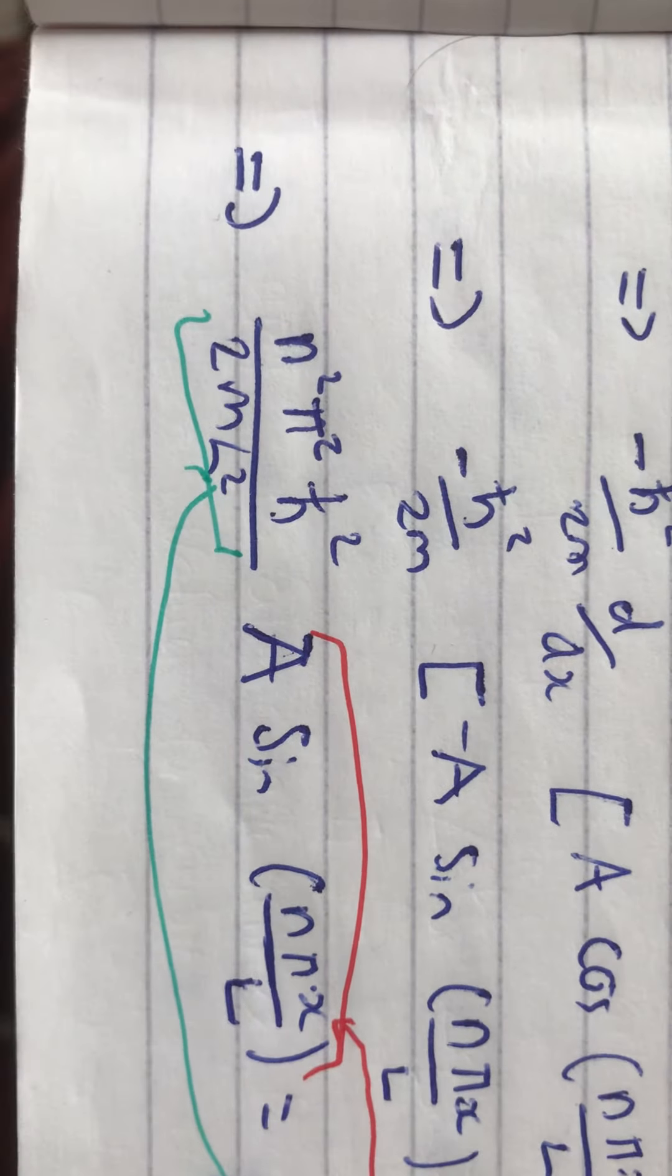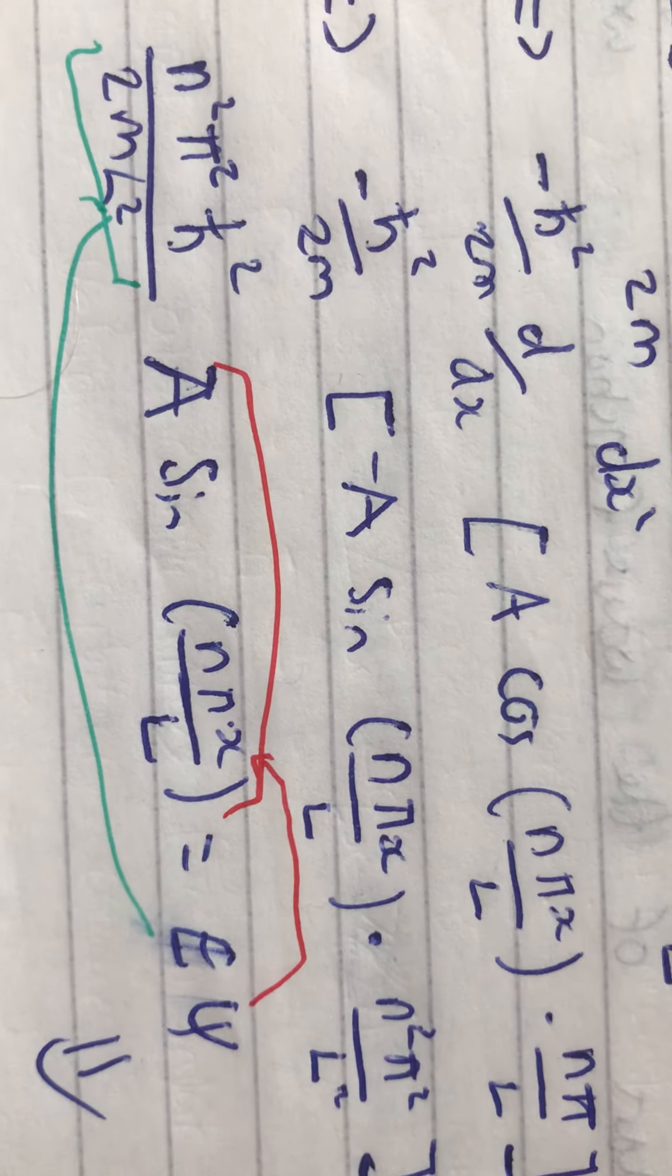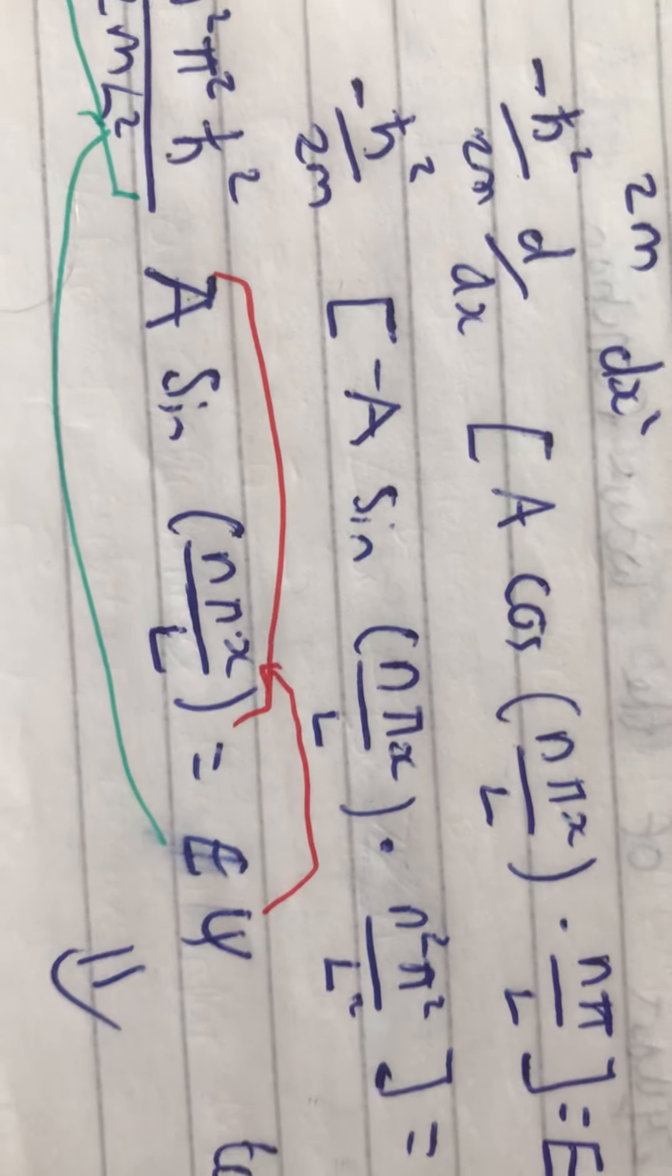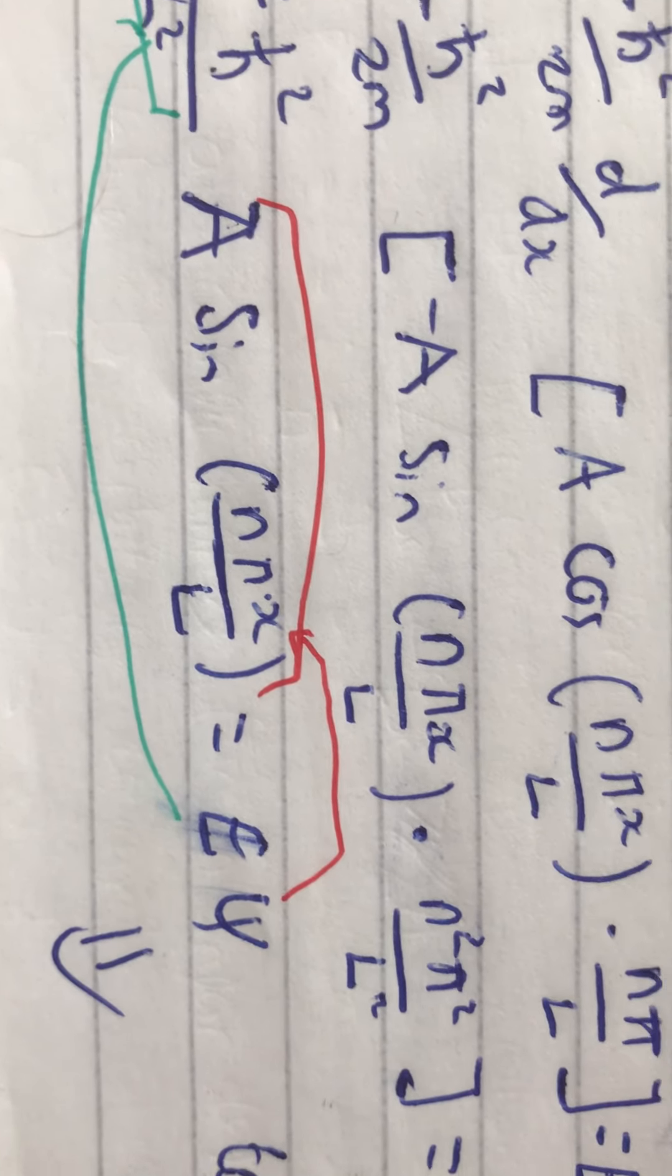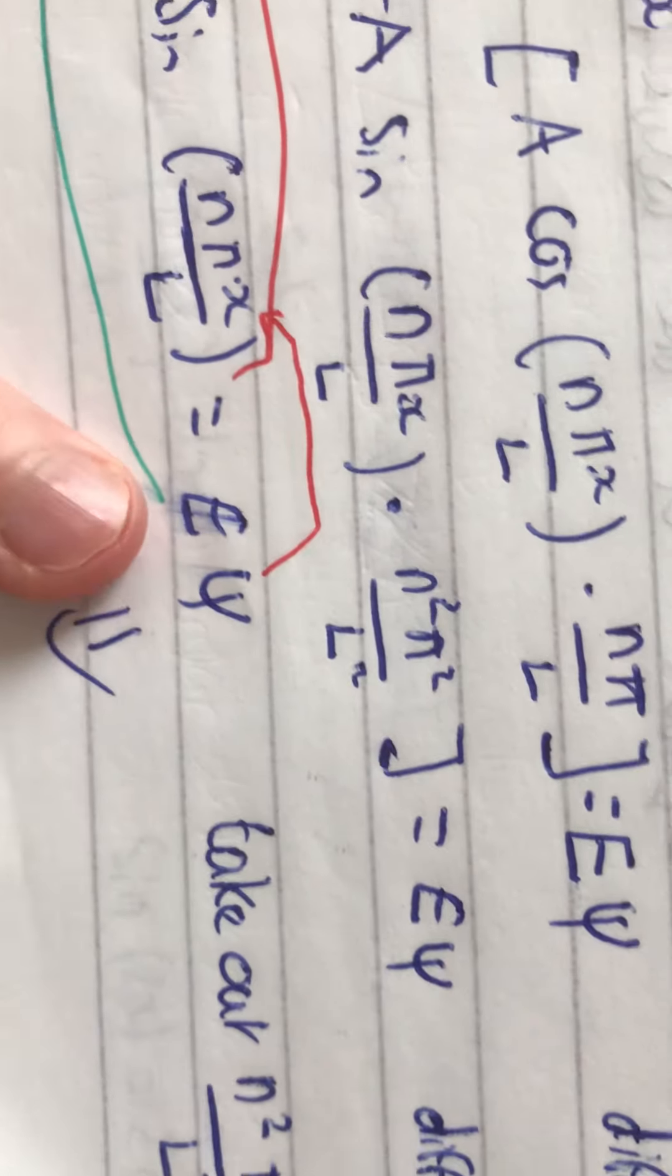Planck's reduced constant squared over 2mL squared times a sin(nπx/L) equals E times the wave function. And,